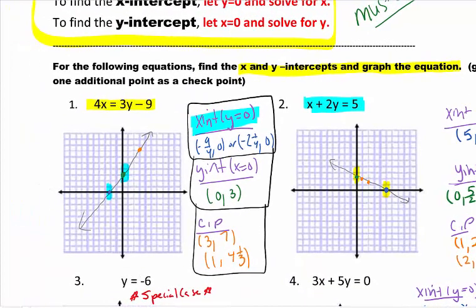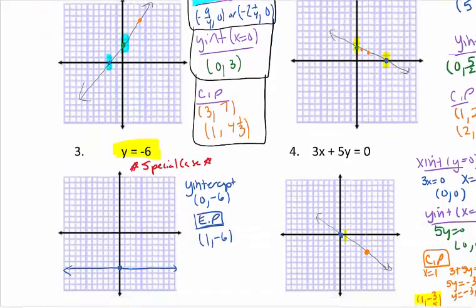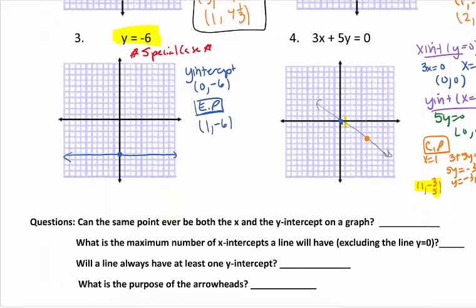So looking at number 3, go ahead and pause it. You should know that this is a special case. y equals negative 6 has one variable. So that means the y equals is a y-intercept, which is 0, negative 6. Any other point you can plot as long as it has a negative 6 in the y value.